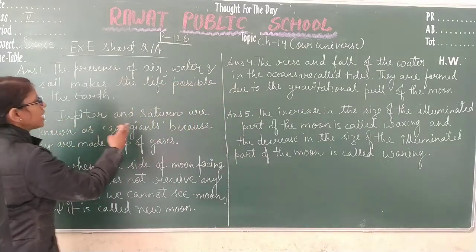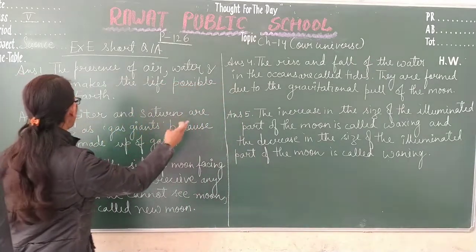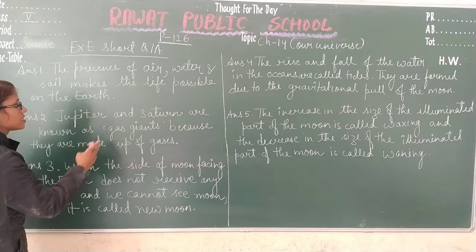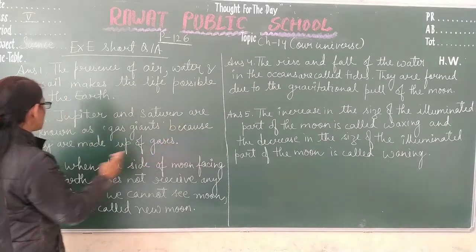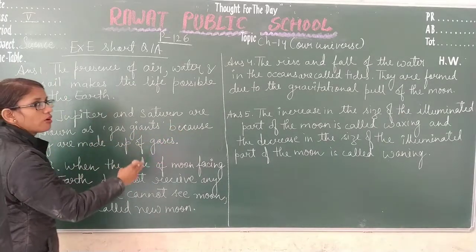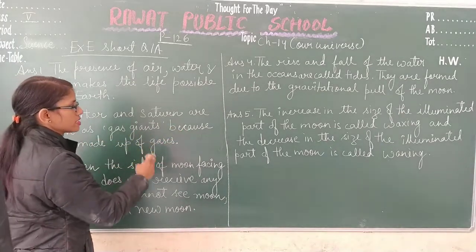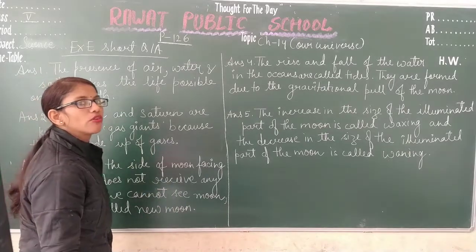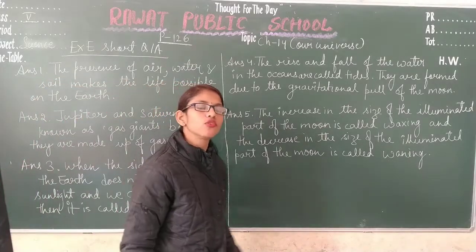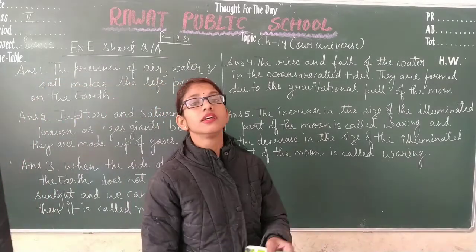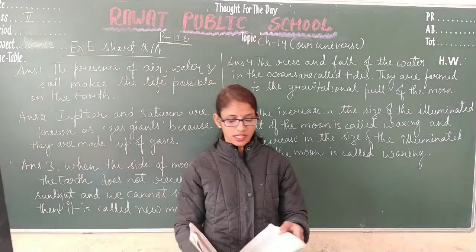The answer of question 2: Jupiter and Saturn are known as gas giants because they are made up of gases like hydrogen and helium, and they are also very big in size.